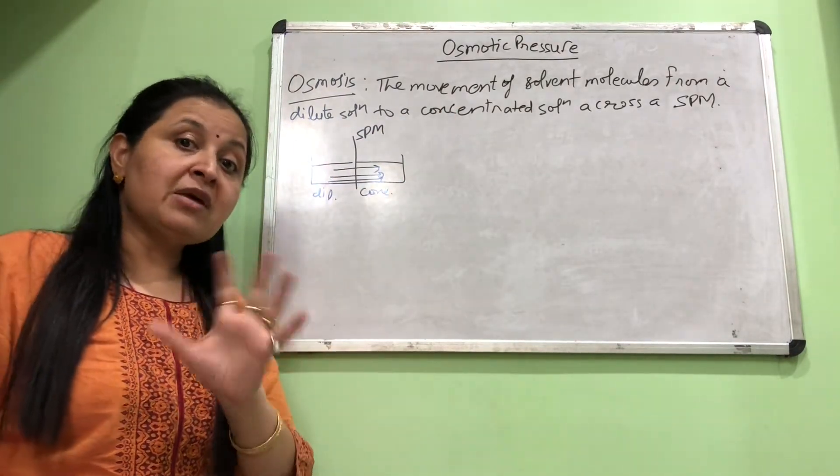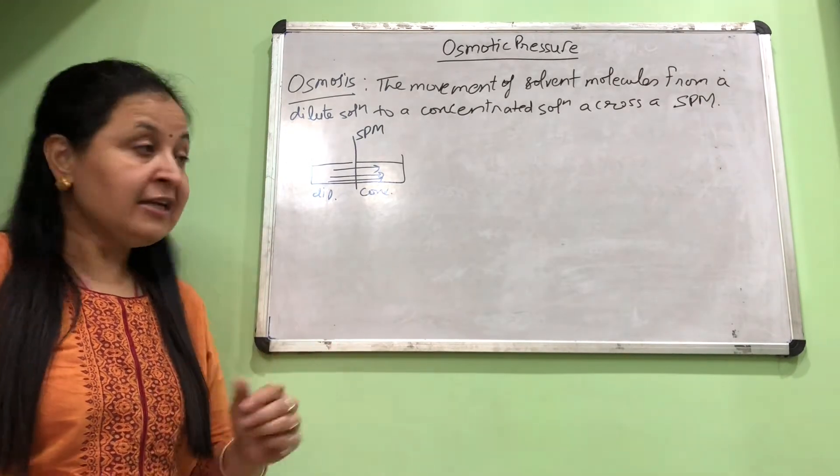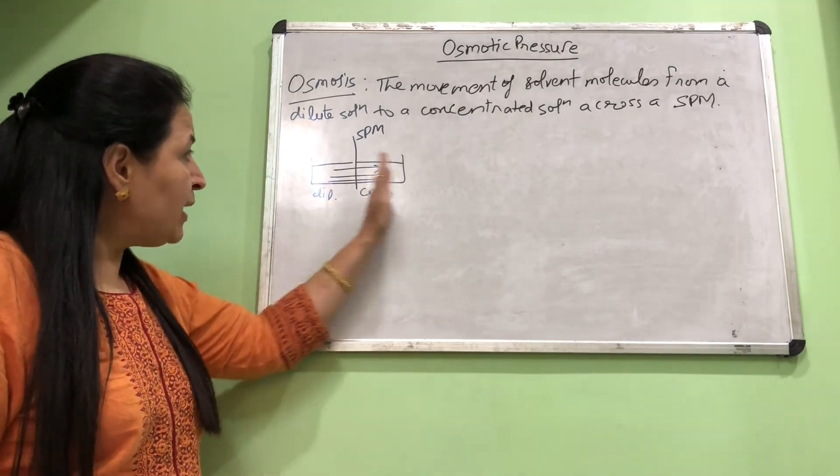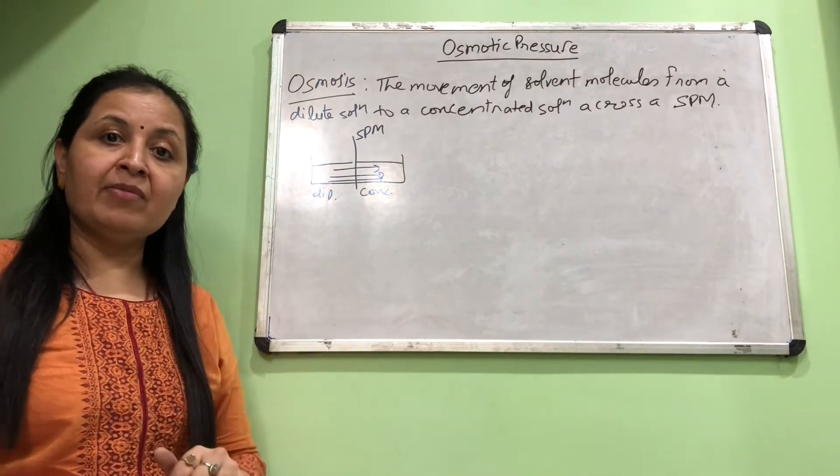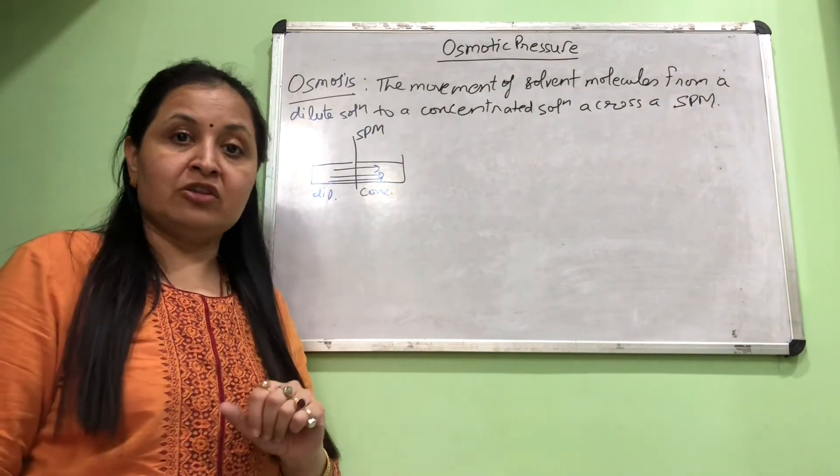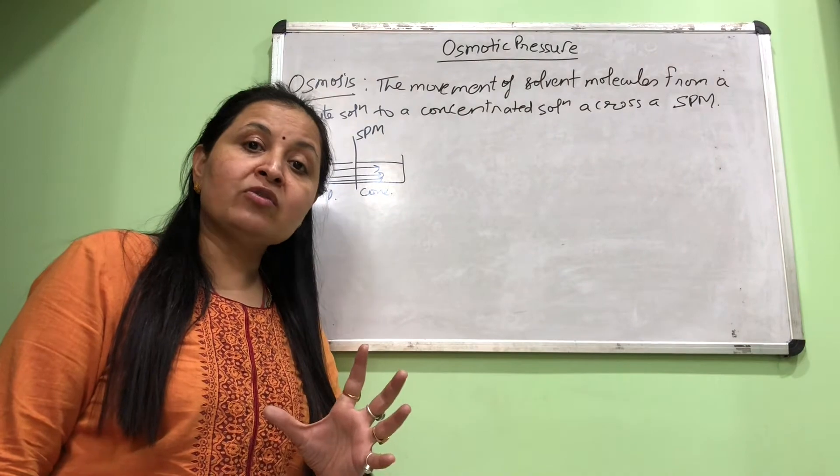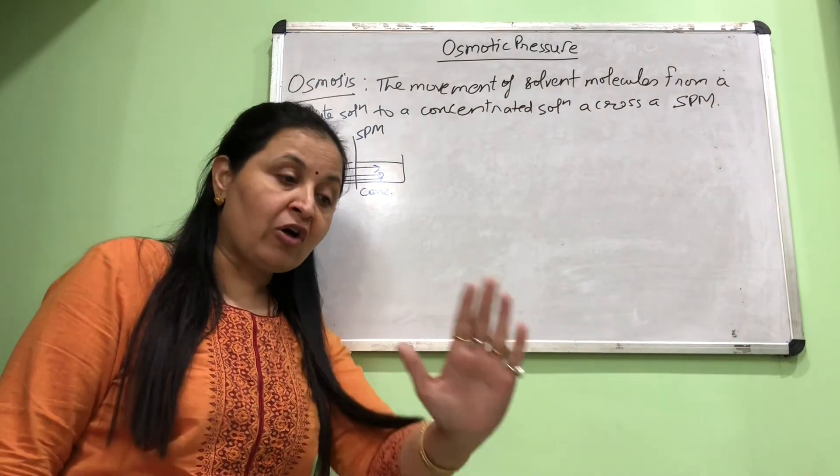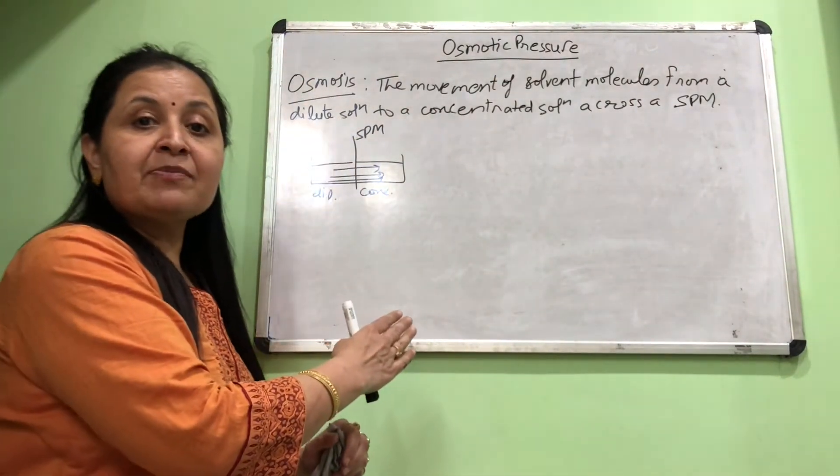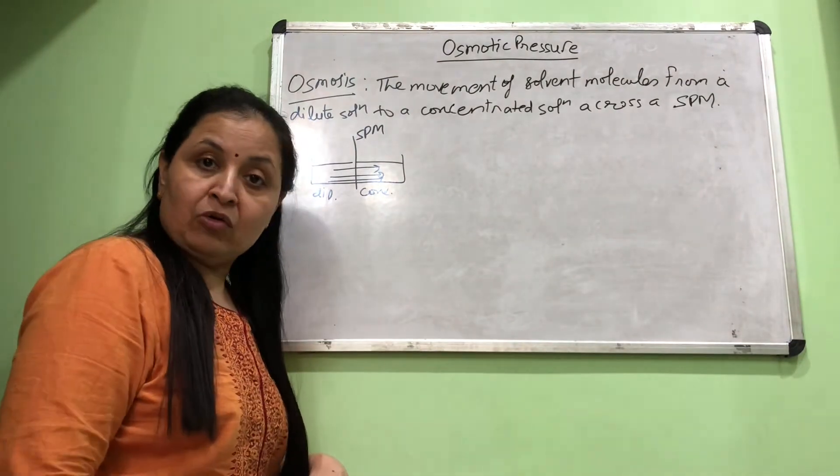What is the aim, what is the force behind this movement? It is for making the concentrations on both sides equal. Until equilibrium is attained, this movement continues. Solvent is moving from a dilute solution to a concentrated solution - this movement is called osmosis. Now suppose I want to stop this movement across the semi-permeable membrane. To stop any forward movement, we need to apply pressure from the opposite side.